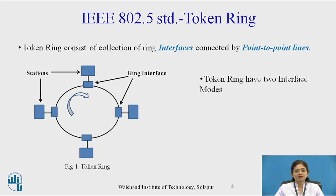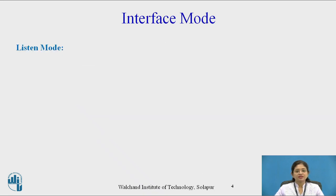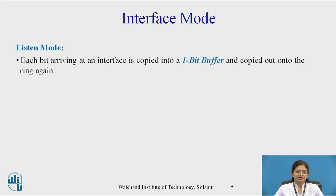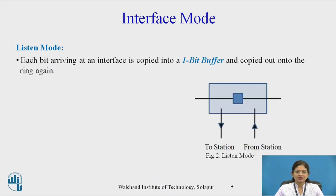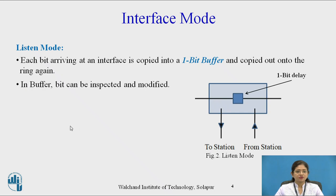Token ring has two interface modes: listen mode and transmit mode. In listen mode, each bit arriving at an interface is copied into a 1-bit buffer and copied out onto the ring again. In this diagram, a token coming from the station undergoes some modification in this buffer, then that token is passed to the same station. During this modification, a 1-bit delay is introduced — so in the buffer, a bit can be inspected and modified, and this step introduces the 1-bit delay.